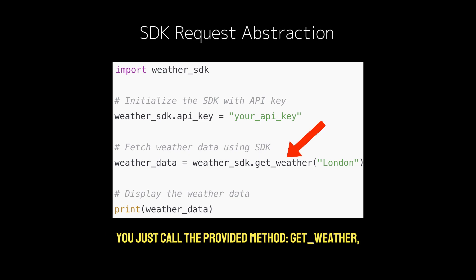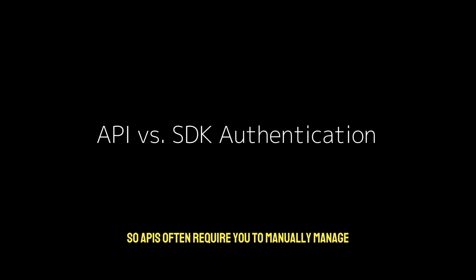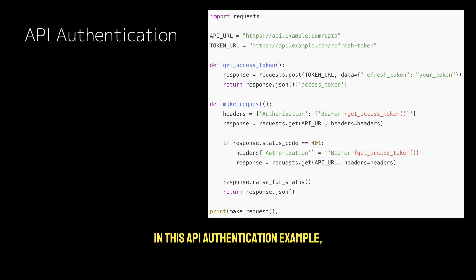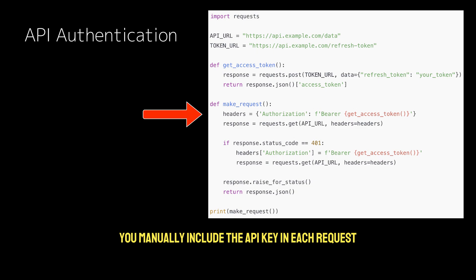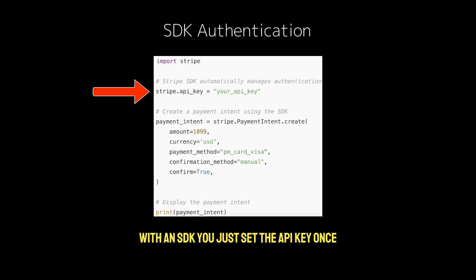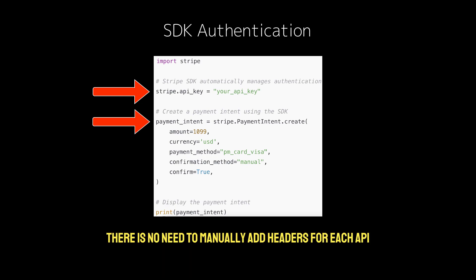APIs often require you to manually manage authentication, such as adding API keys to the headers or handling OAuth. In contrast, SDKs streamline this process by managing authentication for you. In this API authentication example, you manually include the API key in each request, and handling authentication, bearer token renewal, and expiration must be done manually. With an SDK, you just set the API key once, and the SDK handles the authentication process with each request — there is no need to manually add headers for each API call.